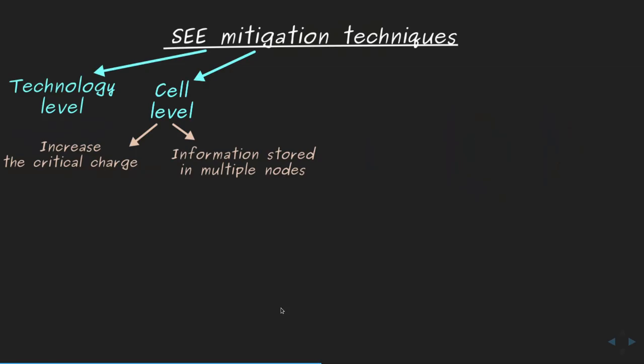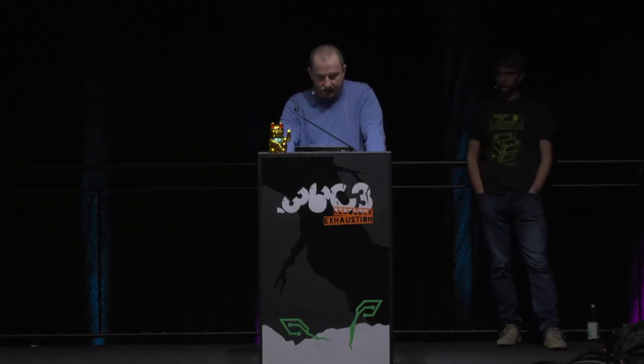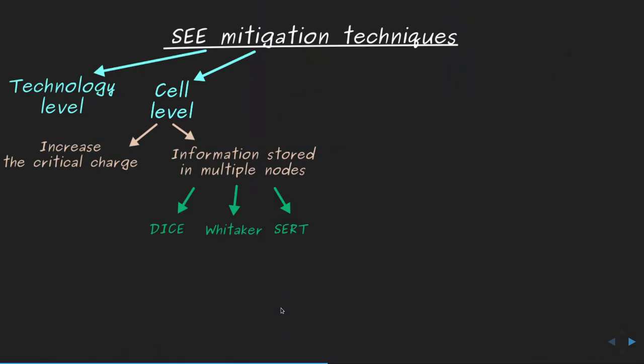At the cell level, protection can be achieved by increasing the critical charge — for example, by using larger transistors (though this increases the collection electrode area) or by adding extra metal capacitance (though this slows the circuit). Another approach is to increase node capacitance to make it harder for a particle to deposit enough charge to cause a flip.